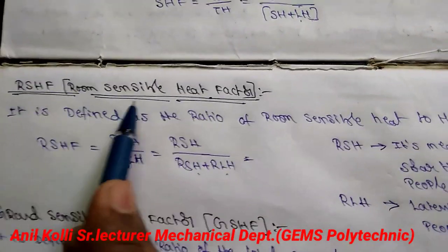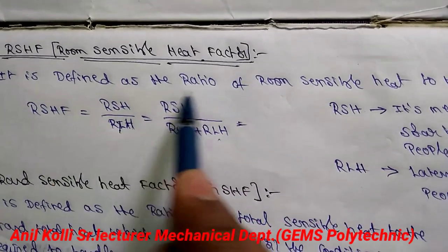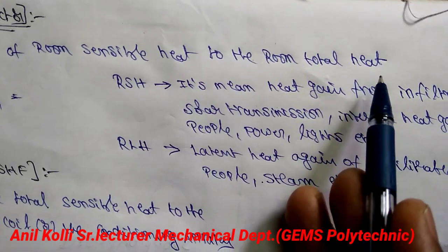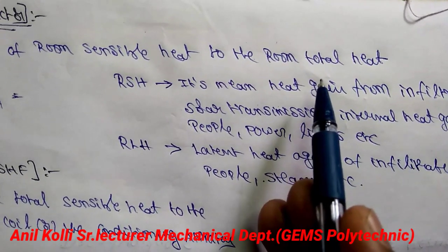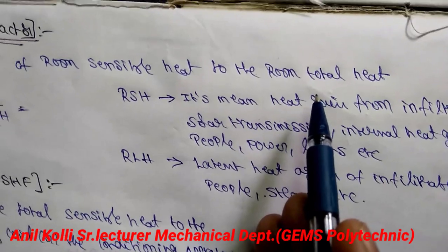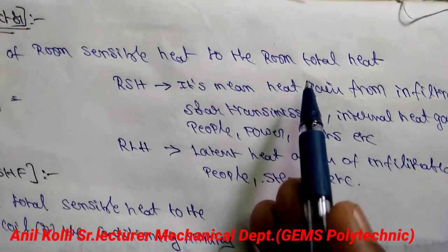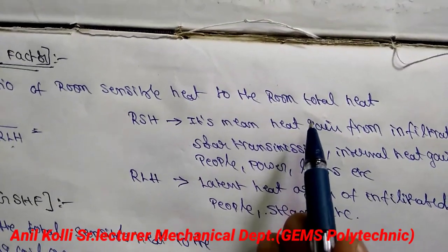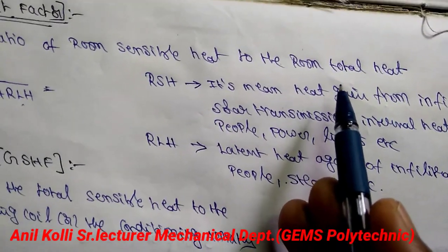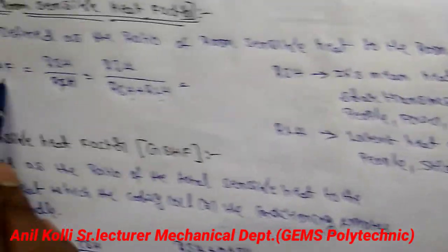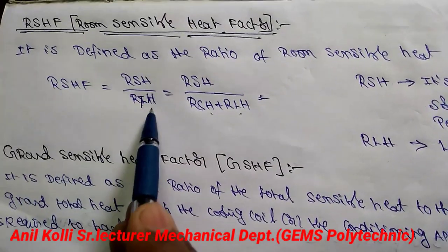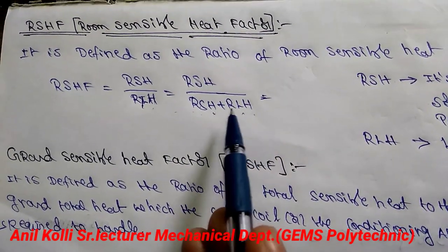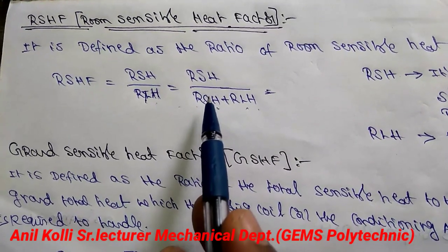What is room sensible heat factor? It is defined as the ratio of room sensible heat to the room total heat. When we talk about a room — for example, a hall or an auditorium — we can call it the auditorium sensible heat factor. Room sensible heat factor equals room sensible heat divided by room total heat. Room total heat means room sensible heat plus room latent heat.